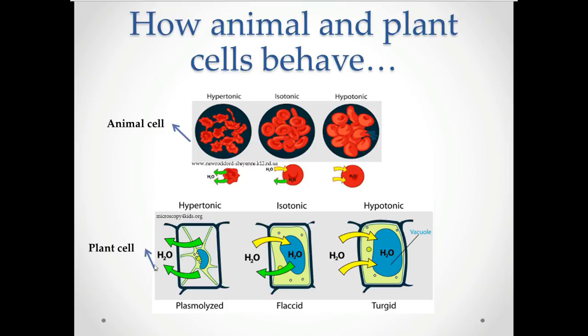In a plant cell, when it's hypertonic, they get plasmolysed. These terms are very important to remember. You need to remember these terms for this AQA specification, guys. So in a hypertonic, they are plasmolysed, and in an isotonic, they are flaccid. And in a hypotonic, they get turgid because the water moves into them. But you may be wondering why the plant cells don't burst, but the animal cells do.